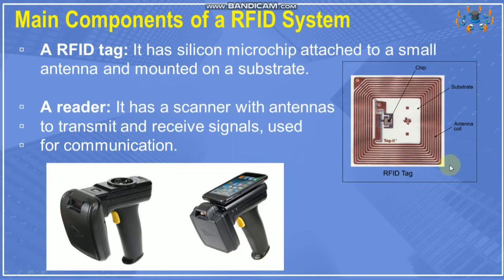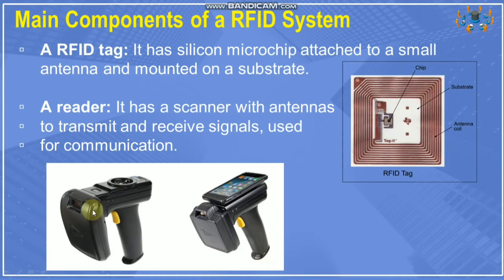This is an RFID tag and this is your RFID reader. The RFID tag has a silicon microchip attached to a small antenna and mounted on a substrate — you can see this image in your textbook as well. This is the substrate, this is the antenna, and this is the chip. A reader, like the ones found in grocery shops, scans the barcode and the barcode details are read by the reader, then data is collected through the system.